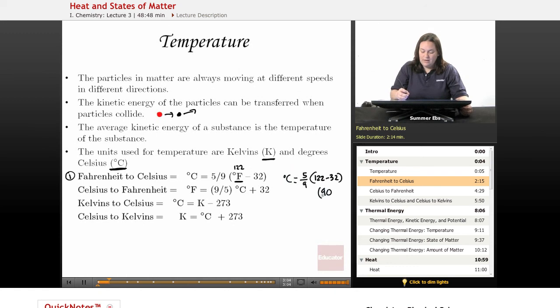So you'll have 90 times 5/9. It's going to equal your degrees Celsius. So these will cancel, and you'll end up with 50 degrees Celsius is what you have. So 122 degrees Fahrenheit is actually 50 degrees Celsius. That's a super hot day really in the middle of the desert.